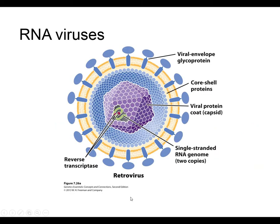That concludes our discussion of how chromosome recombination can happen between bacterial cells. Make sure you know the definitions and mechanisms of conjugation, transformation, and transduction.